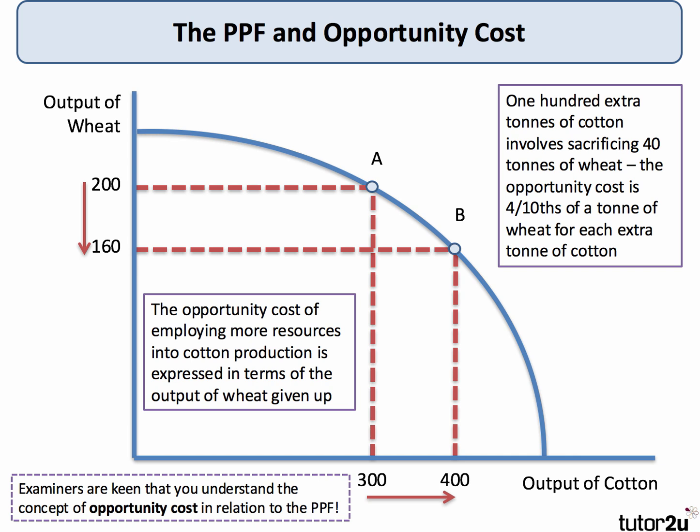The PPF shows combinations of two products — in this case wheat and cotton — that can be produced using all available production resources efficiently. We can use the shape of the curvature of the PPF to explain the idea of opportunity cost.